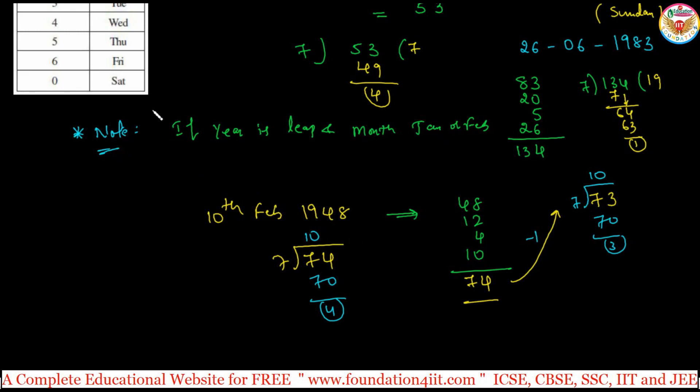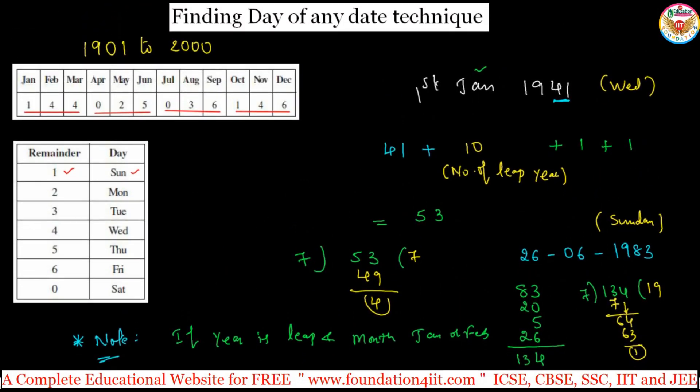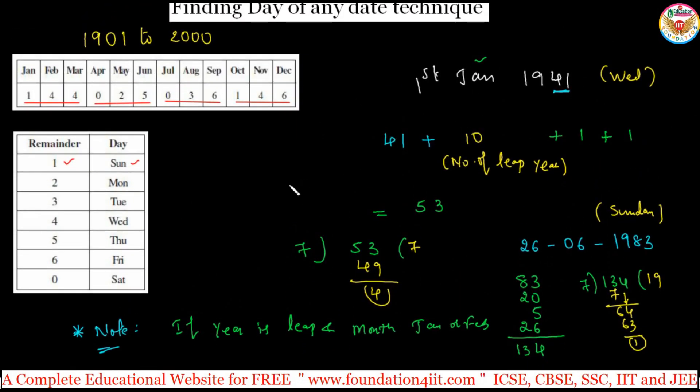In case the year is a leap year and the month must be either January or February, this is the exemption. You should reduce one. Whatever date you got, reduce one. This is the code only for 1901 to 2000.